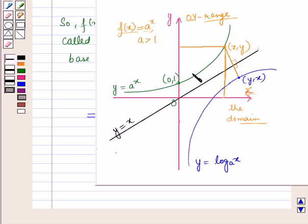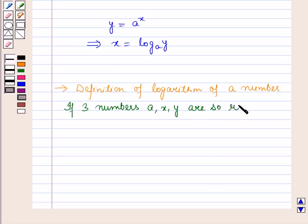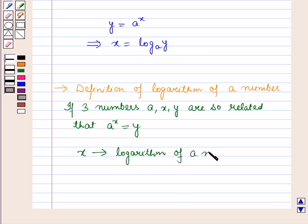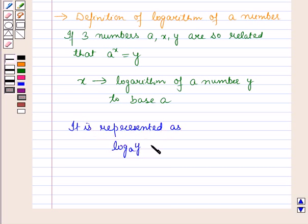The graph of x = log_A(y) is the mirror image of y = A^x in the line y = x. Now let us discuss the definition of logarithm. If three numbers A, x, and y are so related that A^x = y, then x is said to be the logarithm of the number y to the base A, and it is represented as log_A(y) = x.